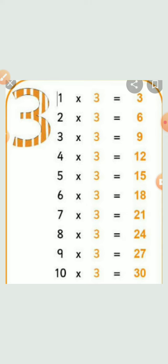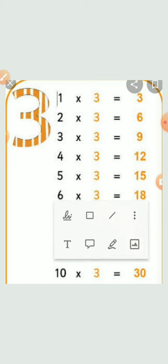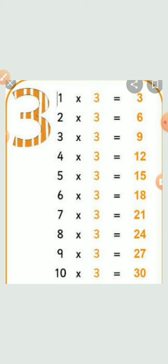Third table: 1 three is 3, 2 threes are 6, 3 threes are 9, 4 threes are 12, 5 threes are 15, 6 threes are 18, 7 threes are 21, 8 threes are 24, 9 threes are 27, 10 threes are 30.